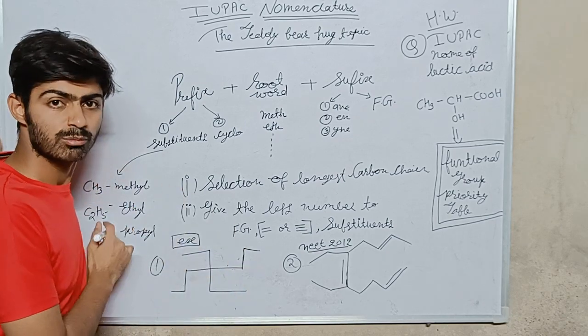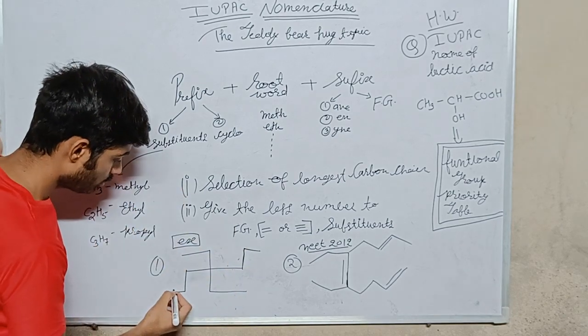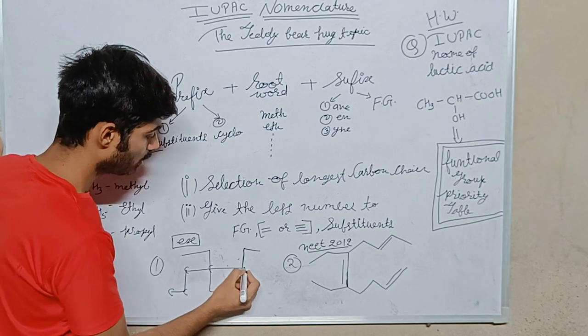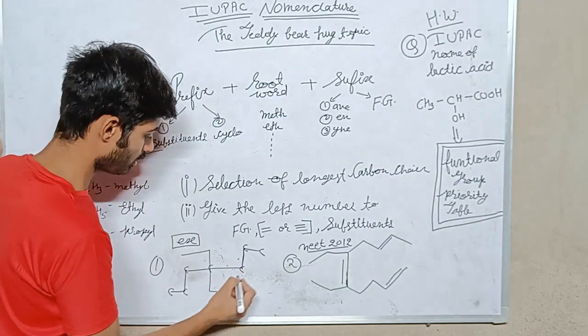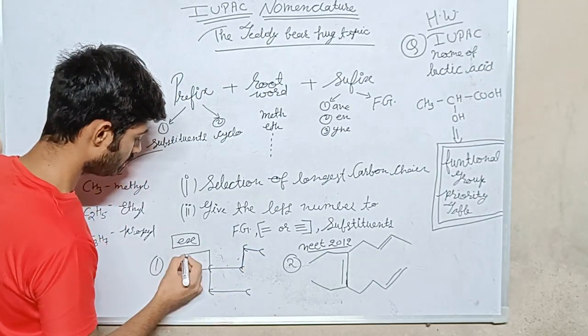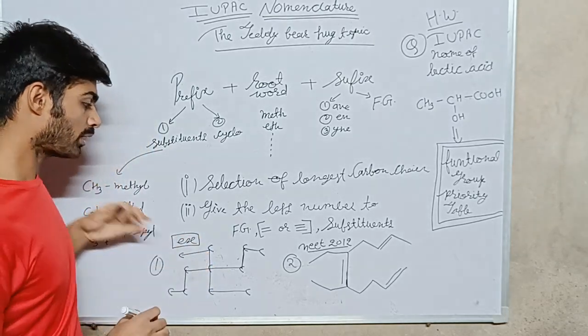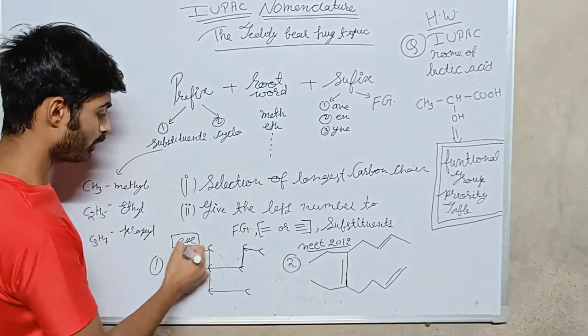How many carbons are present in this compound? Here: 1, 2, 3, 4, 5, 6, 7, 8, 9, 10, and 11. Eleven carbons present in this compound.